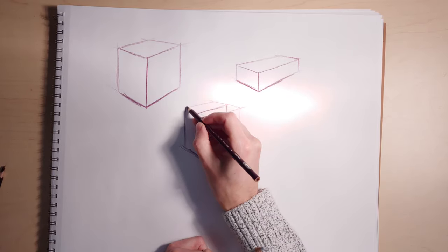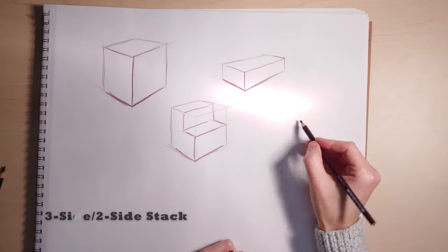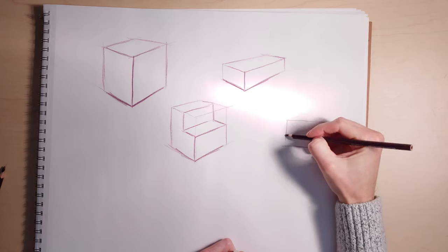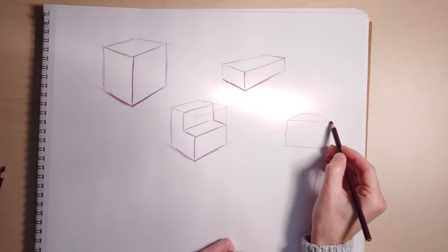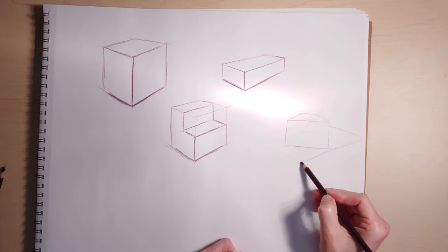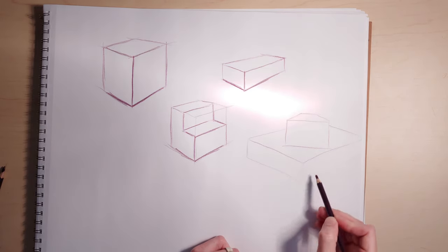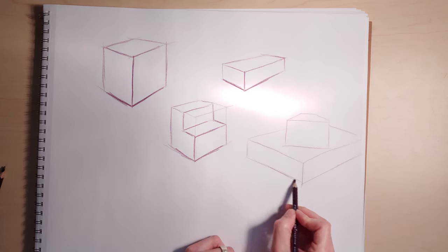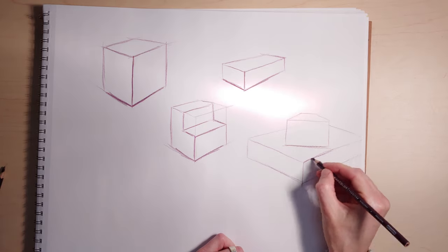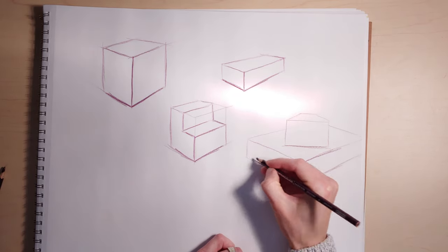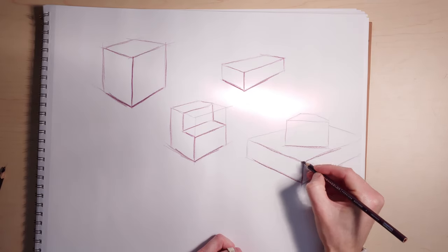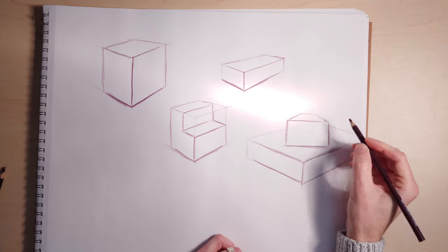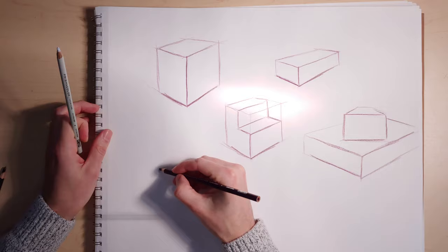Another fun thing to try is the two-side, three-side stack. You draw a box in one-point perspective and then a box in two-point perspective — if you need a perspective review, go check that out and come back. What you're doing is figuring out how to turn a box and have it sit on a similar plane. It's tricky and takes practice, but it doesn't have to be perfect — it just needs to convey the idea that one box is sitting on another, rotated against it.